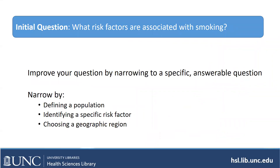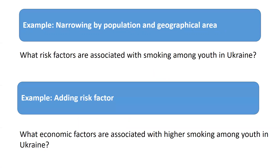So the first step is to look at your initial question: 'What risk factors are associated with smoking?' Is that a good question? Well, it's kind of broad and it's very difficult to build a search strategy for something that broad — there's no specific population, no specific risk factor, no geographic region. You can improve your question by narrowing it. For example: 'What risk factors are associated with smoking among youth in Ukraine?' And then adding a risk factor: 'What economic factors are associated with higher smoking among youth in Ukraine?' — which is quite specific.